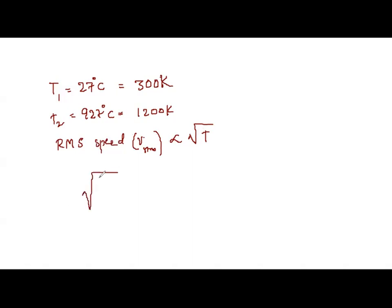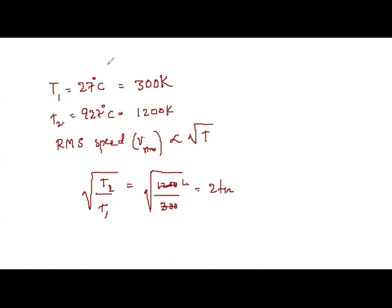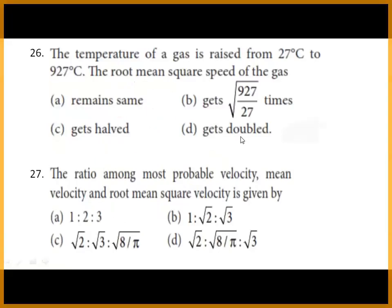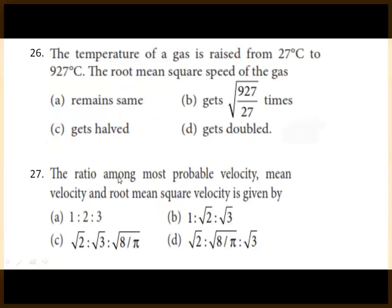We write V₂/V₁ = √(T₂/T₁) = √(1200/300) = √4 = 2. So the RMS velocity has raised two times — it gets doubled. The correct option is option D, it gets doubled.